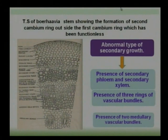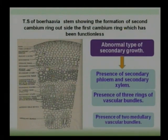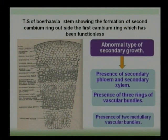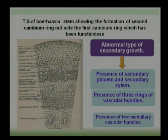After the first cambium ring is formed, it soon becomes functionally inactive. Then parenchyma cells produce a new cambium ring towards the pericycle region — that is, towards the outside. The newly formed second cambium ring again develops secondary phloem towards the outside and secondary xylem towards the inside. After some time, the second cambium ring also becomes functionally inactive, and then a new cambium ring is developed.